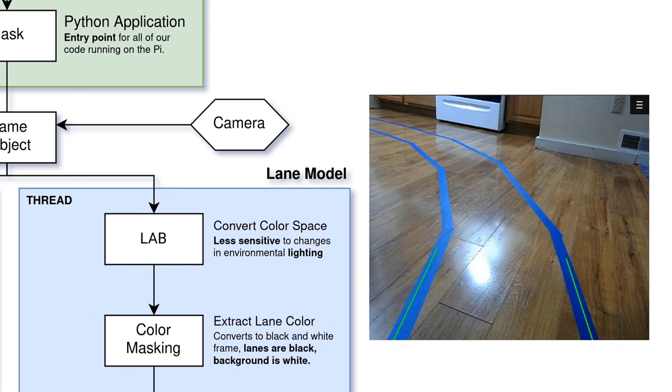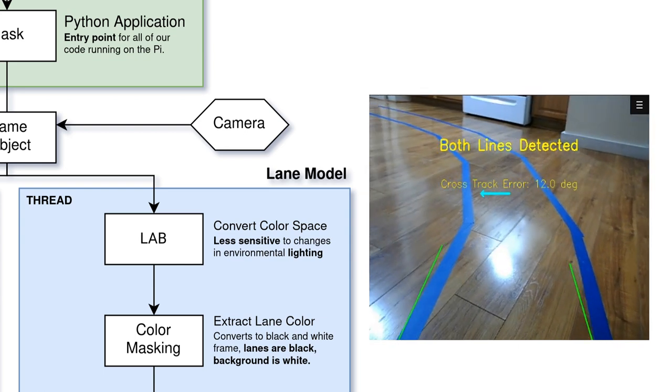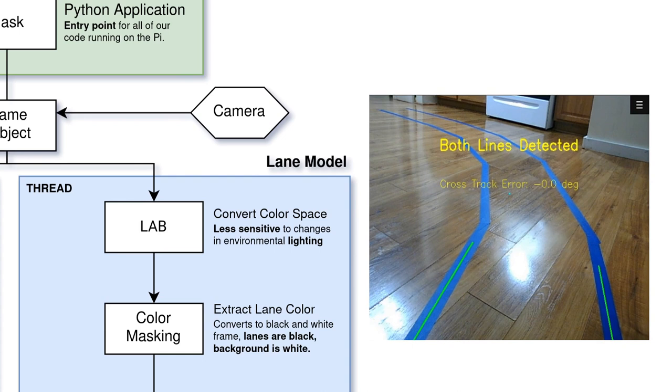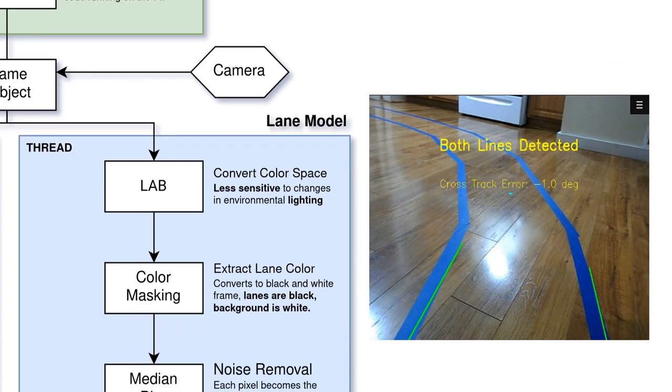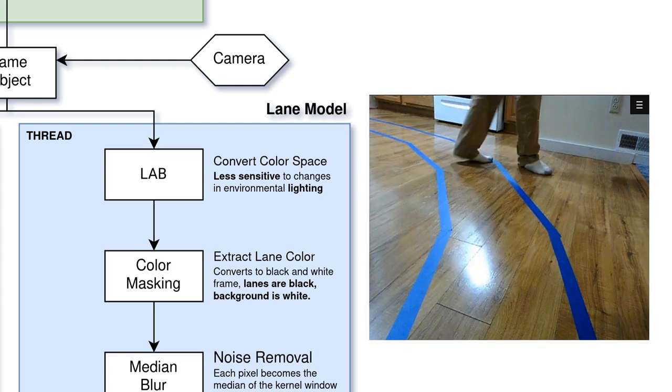The goal of the lane model is to detect the lane and to find the error between the vehicle's trajectory and the center of the lane. As the vehicle is driving we will try to minimize this error by steering the vehicle accordingly. First, we need to detect the lane lines. The incoming frame is in RGB format. The RGB channels are highly sensitive to changes in light, meaning that slight changes in environmental lighting will change our model's ability to detect lane lines.